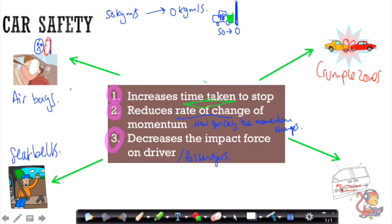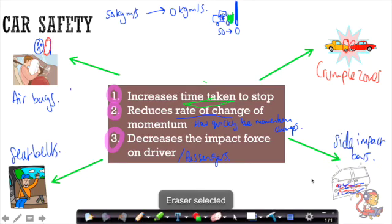Finally, the final car safety feature that I want to talk about is side impact bars. And these are used in conjunction with a crumple zone on the outside of the car. You can see here these side impact bars are used to reinforce the sides of the car to make it stronger. And these side impact bars are really strong.